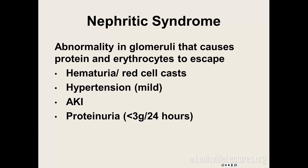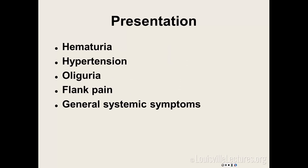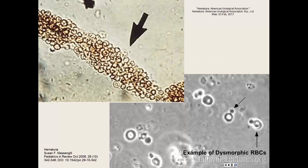Nephritic syndrome is also a problem in your glomeruli, but here you start leaking protein and blood. You won't leak a lot of protein — it'll be less than three grams a day. You'll have hematuria, hypertension, and for most nephritic syndromes, AKI. You'll have oliguria in the setting of AKI, flank pain, and general systemic symptoms. An RBC cast — with dysmorphic RBCs clumping together — is pathognomonic for nephritic syndrome.